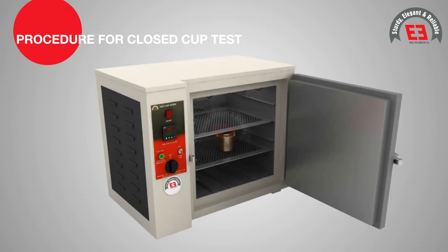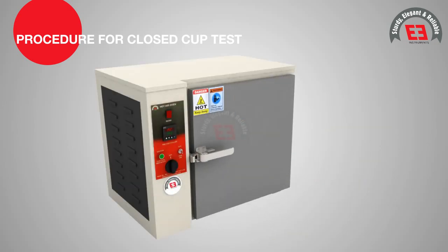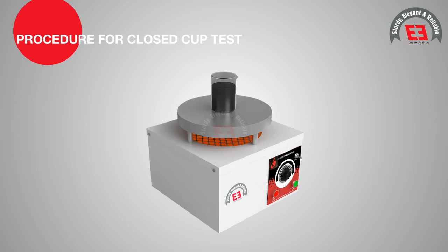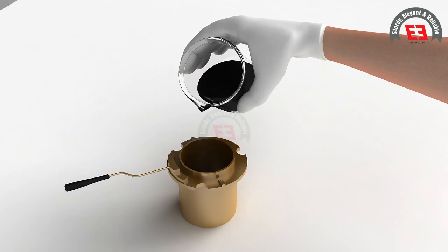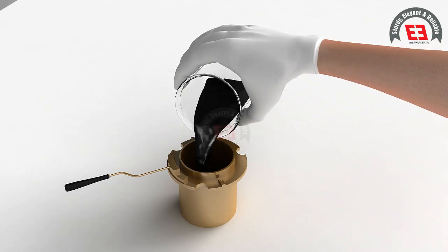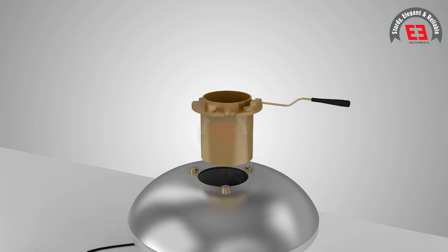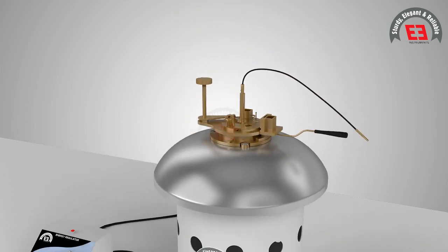Procedure for Close Cup Test: All parts of the Close Cup Tester are cleaned and dried in hot air oven. The bituminous binder is heated well above its softening point and filled in the cup up to the filling mark. The lid is placed to close the cup and heating unit is started.